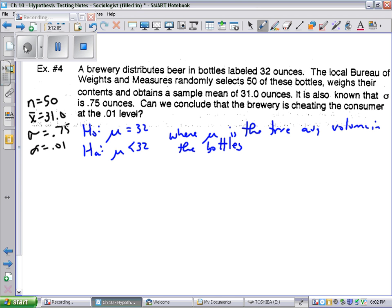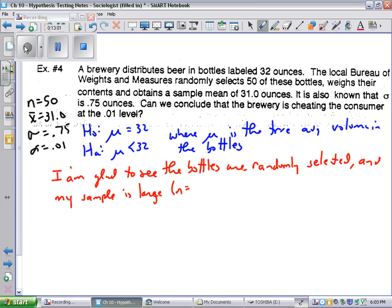The givens that I have here are that N is 50, X bar is 31.0, sigma is 0.75, and that alpha is 0.01. Notice on this problem that we've got a little bit higher level of significance or a little bit tougher level than we had on the previous problem. That's because if we're going to say that this company is cheating people, we want to be pretty certain about it. Just a professor curious if this class is better. Maybe the standard doesn't have to be so tough. Notice that a smaller level of significance is tougher to prove. I'm glad to see that these are randomly selected.